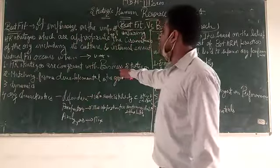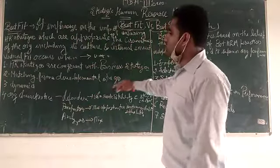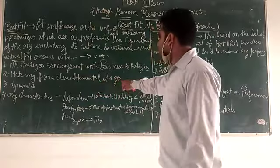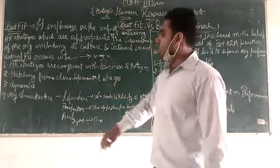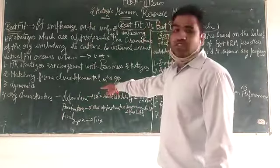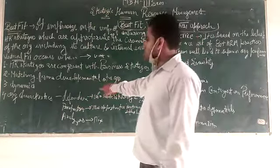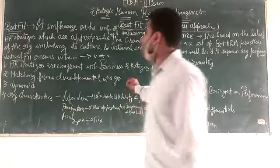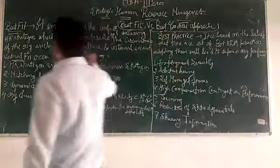These are the four ways in which vertical fit or best fit can be achieved: HR strategies concurrent with the business strategies, matching the firm's developmental stages, organizational dynamics and change, and organizational characteristics.